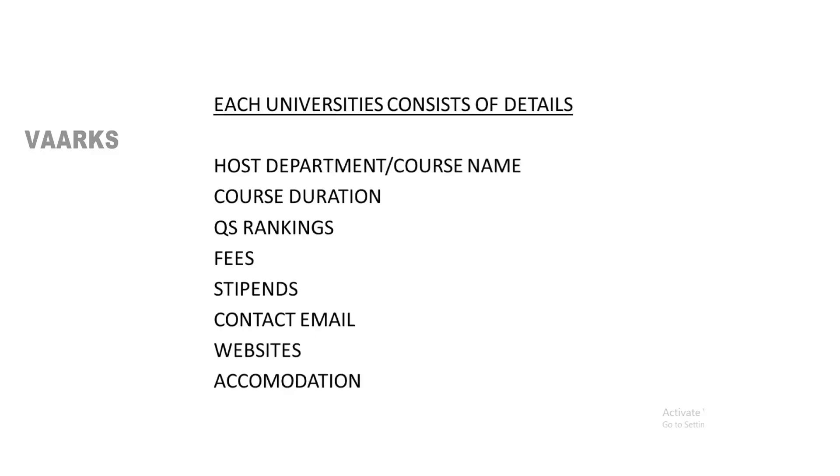Then the stipends. Most of the details of stipends are included within the scholarships section. If stipends are available directly from the universities, I have included those details in this section too. The next section is the contact email. Most of the times candidates find it difficult to get the details of the PhD program because they cannot find the specific contact email. So I have introduced the contact email specifically for the department of engineering so that candidates can contact the department regarding the requirements for application and other steps.